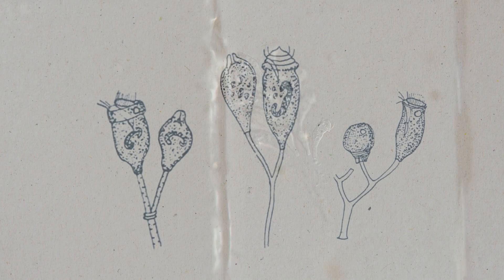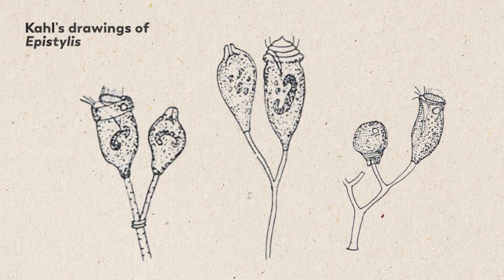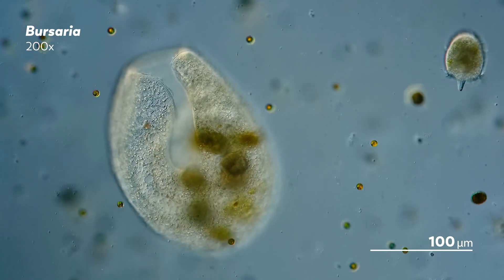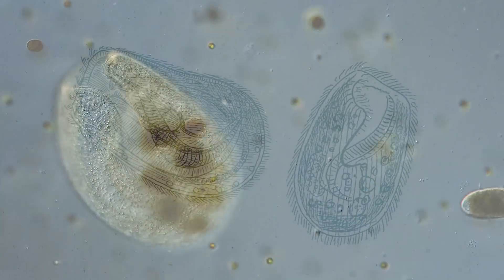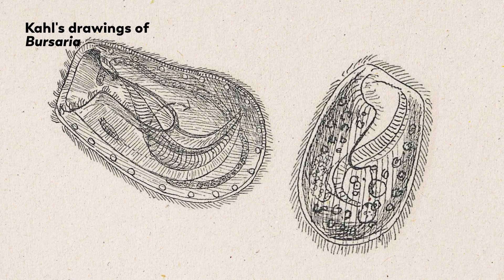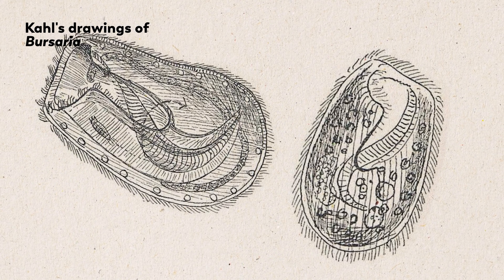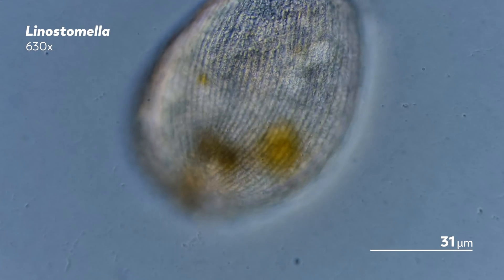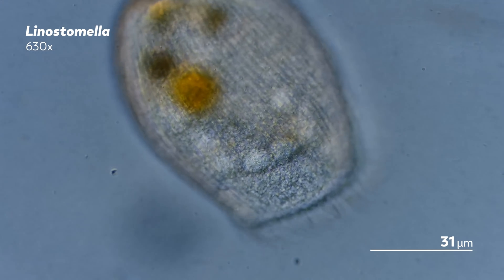Alfred Kahl's texts have gone on to become immensely important to those who study ciliates, filled with drawings that help those like James, our master of microscopes, who are trying to figure out what they see under their microscopes. The tools may have changed, the ways we share information has evolved. But the delight and the curiosity — that remains unchanged.